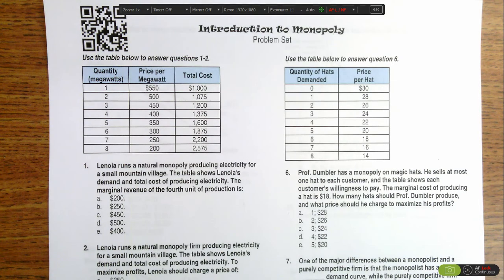This question is asking us to determine the marginal revenue of the fourth unit of production. The first thing we need to do is figure out what the total revenue is for each of the quantities of megawatts and then calculate the marginal revenue.